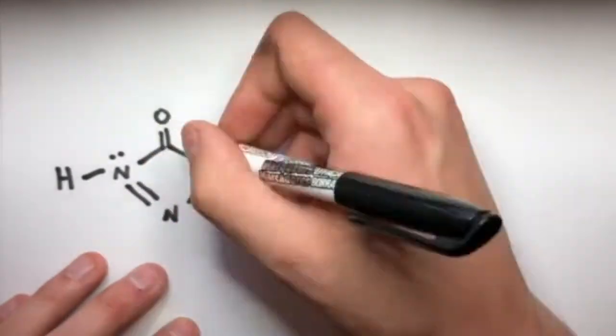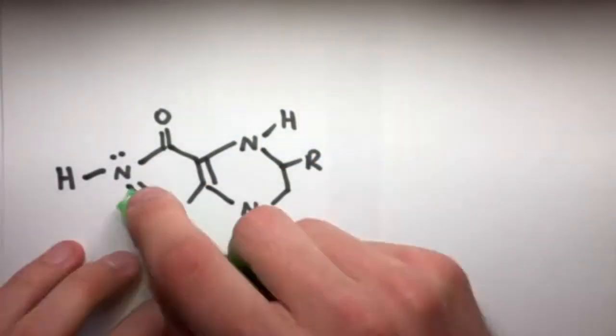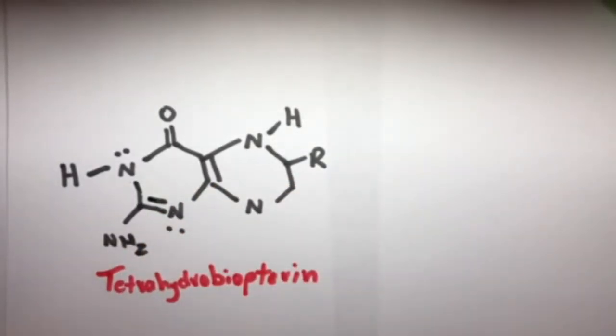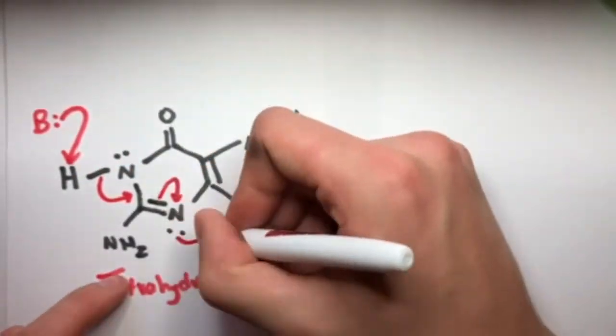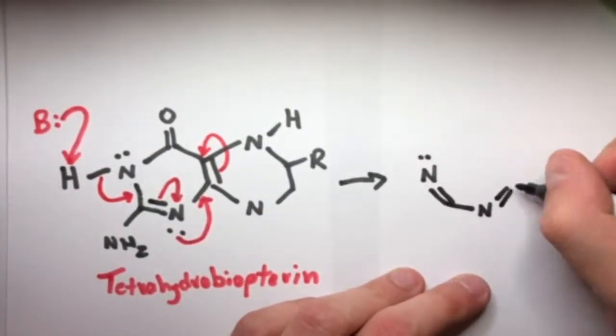Phenylalanine is converted to tyrosine through hydroxylation by enzyme phenylalanine hydroxylase with cofactors of oxygen and tetrahydrobiopterin. The first step is that a base extracts a hydrogen from this nitrogen on the tetrahydrobiopterin, causing the electrons to be dumped into the ring. The electrons transfer through the ring structure to where it makes a resonance-stable anion.